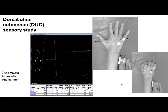In the first tracing, we have the DUC SNAP, again with insufficient stimulation resulting in low amplitudes at 10.4 microvolts and prolonged latencies. In the bottom tracings, we can see good amplitudes and conduction velocities. However, when we increase the stimulation a bit more, we got this big motor artifact.